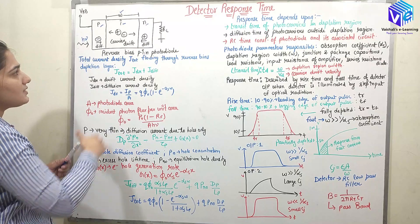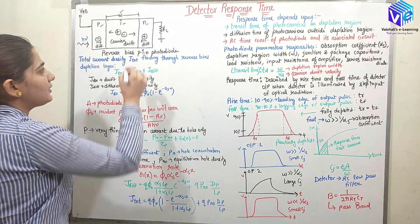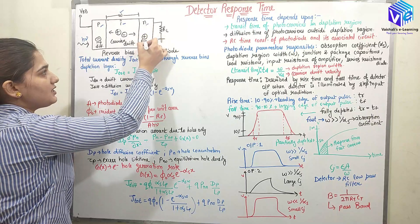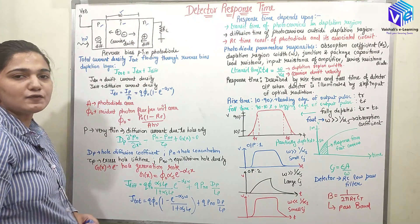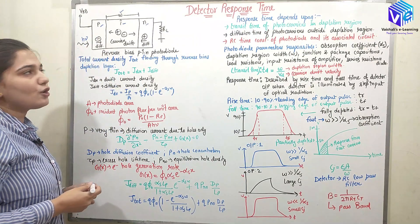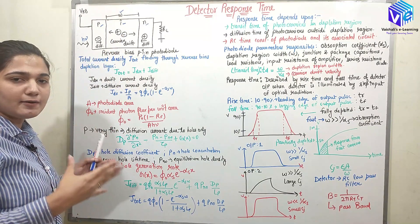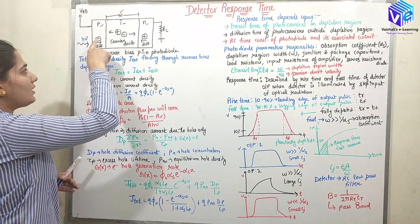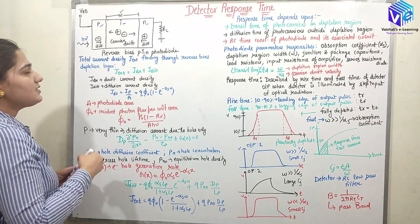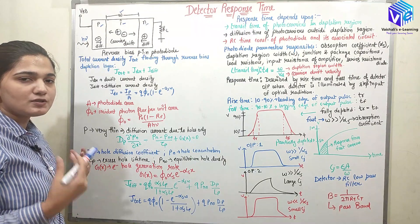We have the carriers generated in all three regions. The positive type of carriers, which are holes, are generated in the N region and have to move towards the I region with the diffusion velocity. The negative type of carrier, that is the electron, is generated in the P region and is again moving towards the I region. The I region is fully covered as a depletion region, so the electrons are moving towards the depletion region with the diffusion velocity.